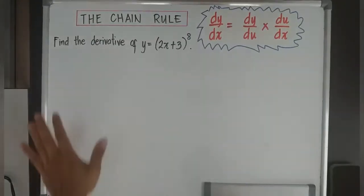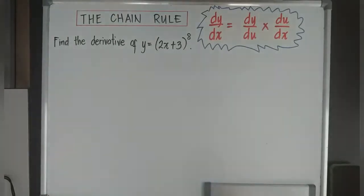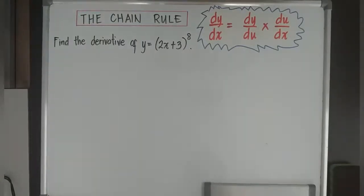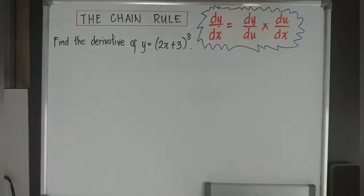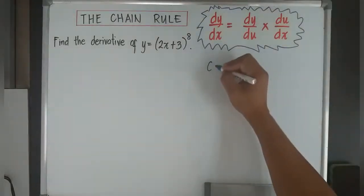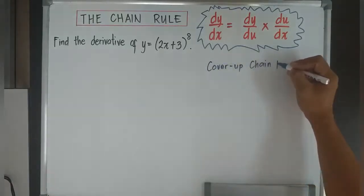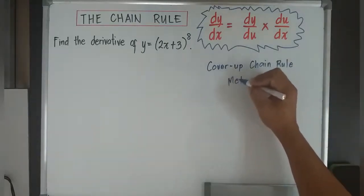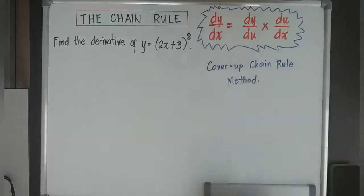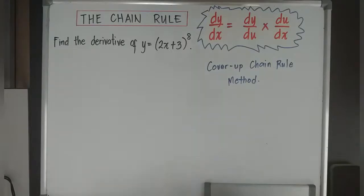Now, is there another way to do chain rule? There is, and it's a little bit easier than the previous method because it will not entail as much working. What is that way? It is what you call the cover-up chain rule method. How do we use the cover-up chain rule method? From the word itself — cover-up — we are going to cover up the expression inside the bracket.